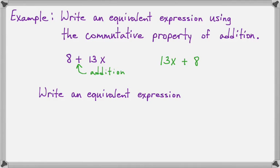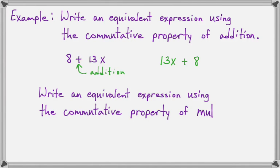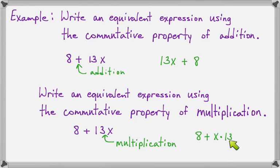Now let's write an equivalent expression using the commutative property of multiplication. So same expression to start with, but if I want to use the commutative property of multiplication, I have to figure out what two things are being multiplied. And I have 13 times x. So if I change just the order of the multiplication, that will leave me with 8 plus x times 13. And that's the commutative property of multiplication.